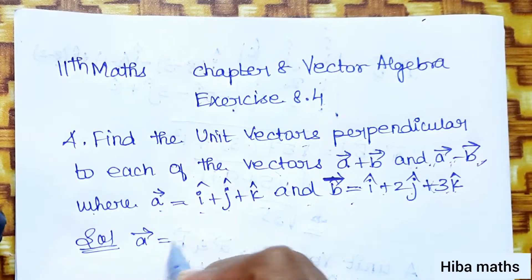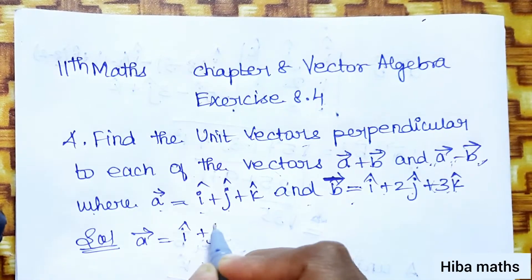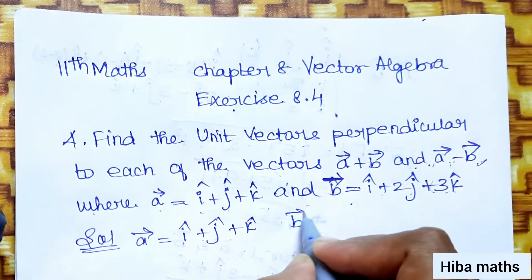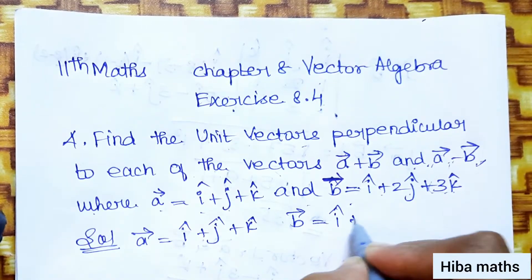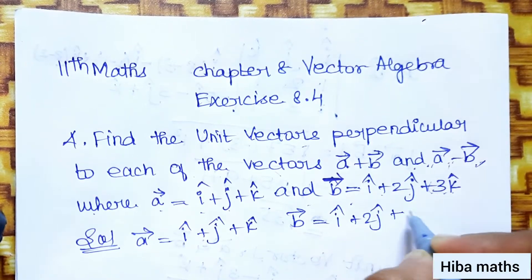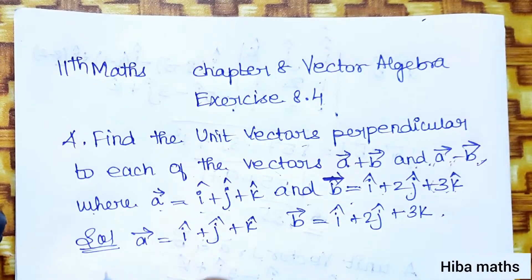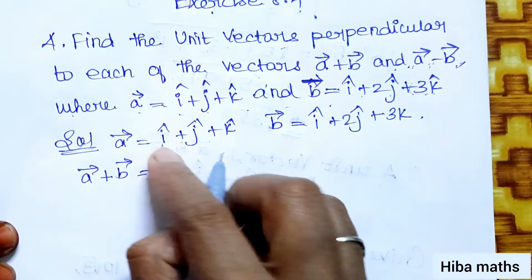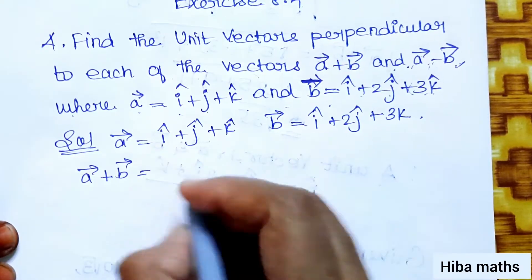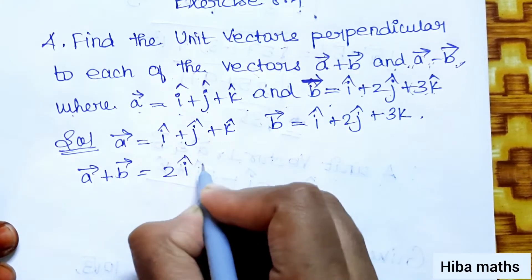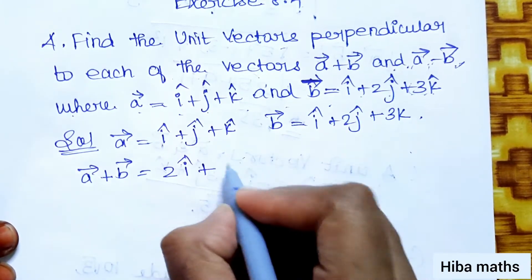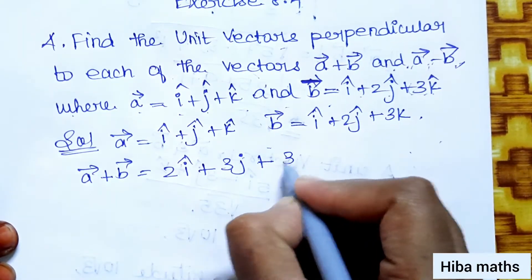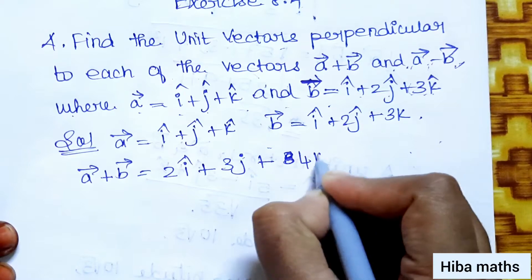Solution: A vector equals i+j+k and B vector equals i+2j+3k. First, A vector plus B vector: adding components, 1+1=2, so 2i; j+2j=3j; k+3k=4k. So A+B equals 2i+3j+4k.